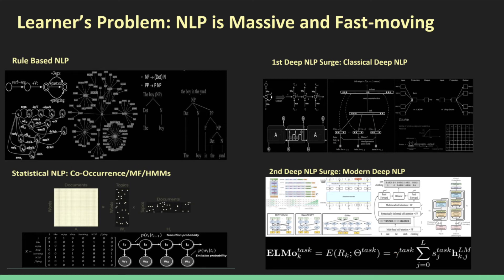Each era comprises a variety of methods and methodologies. On this screen, however, you can see that we can divide them into four main categories: rule-based natural language processing, statistical natural language processing, the first surge of deep learning, and the second surge of deep learning.